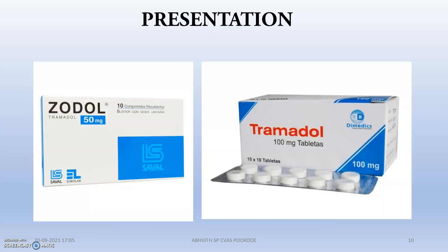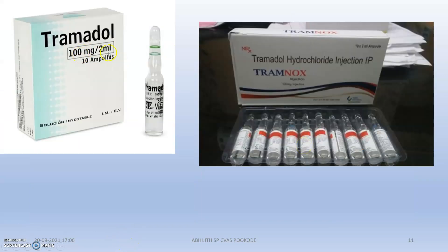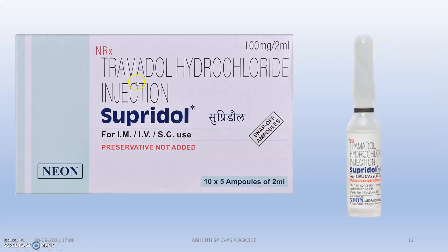These are the presentations available. The 50 mg tablets and 100 mg tablets are not available in India. The 100 mg per 2 ml ampoule is available in India under the brand name Pramnox. This is Tramadol hydrochloride injection as per the international pharmacopoeia, containing 10 vials of 2 ml ampoules each. A very popular brand in the veterinary field is Supridol, produced by Neon, for IM, IV, or subcutaneous use, with 100 mg in 2 ml.